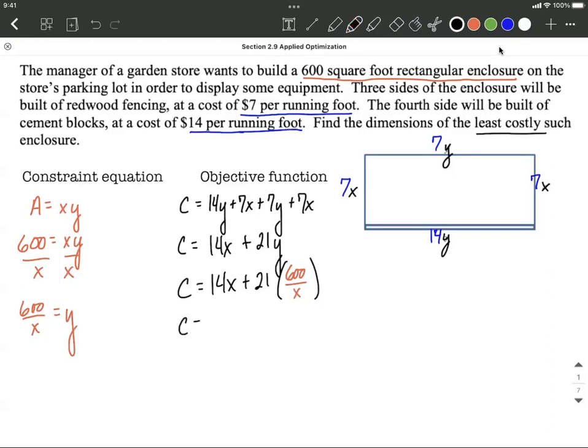From here let's simplify it a little bit. This will be 14x plus the 21 as if it's over 1, multiply numerators together to get 12,600. I'm going to think that x is raised to the first power while it's in the denominator. We're allowed to move it up to the numerator and make it a negative exponent.